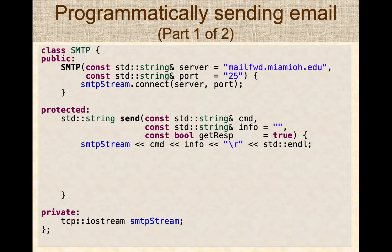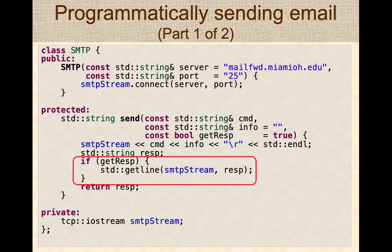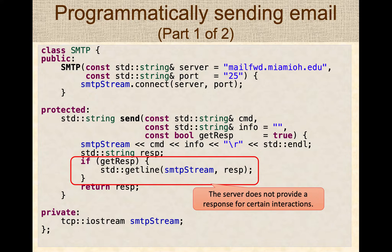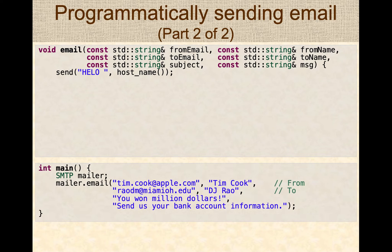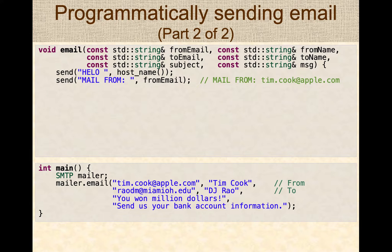Sending is simple — you just print the string to the server stream. Optionally, we also get a response, since some commands do not get a response from the server. A flag indicates whether we want to receive a response. If a response is required, the helper method reads a line and returns it to the caller. For the send mail operation, we first send the HELO command with the host name. You can call this from main with the sender's name, email address, recipient's name, email address, the subject, and the message.